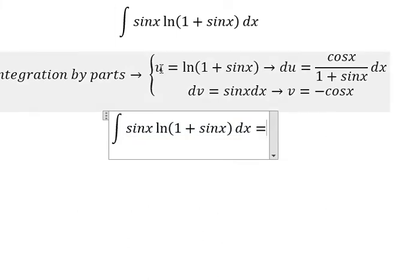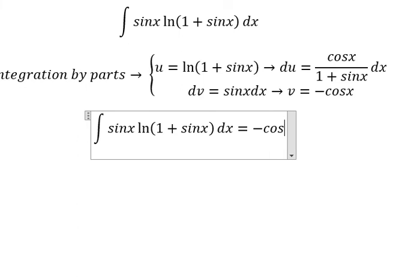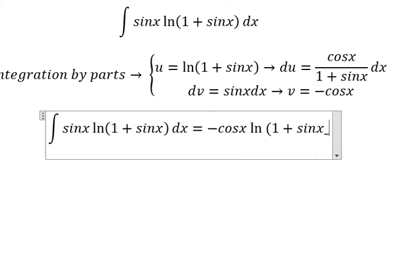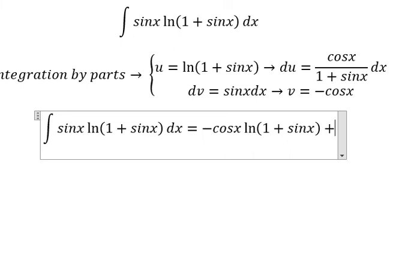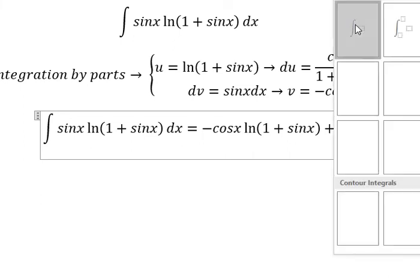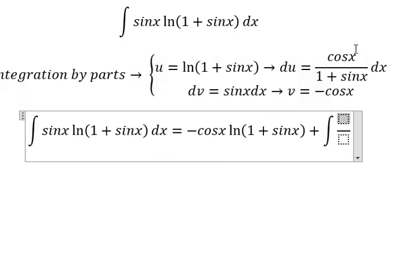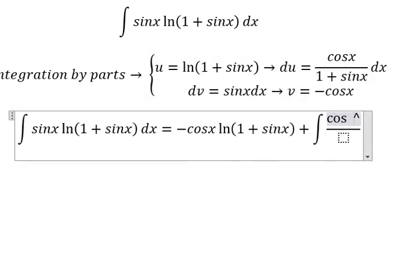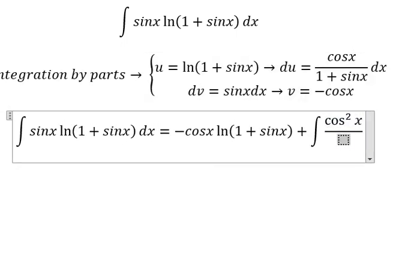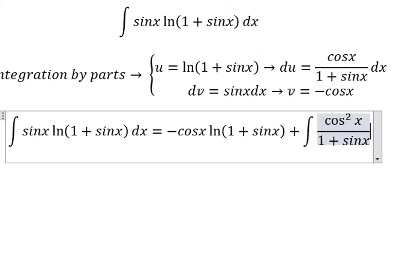So we have u multiplied with v equals negative cosine x ln of one plus sine x. Next, because we have the negative sign here and another negative sign here, it becomes positive. This gives us the integral of cosine squared x over one plus sine x dx.